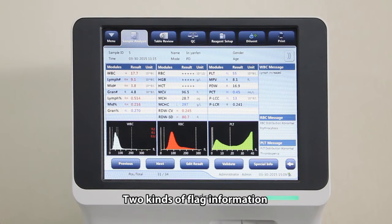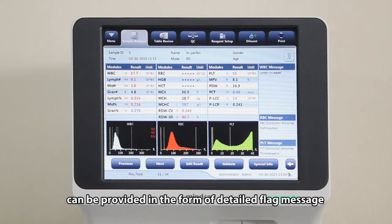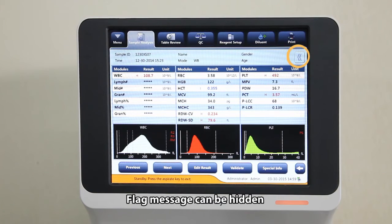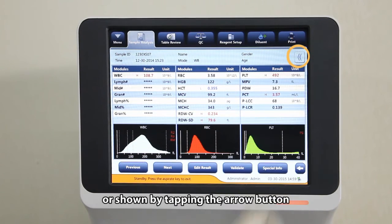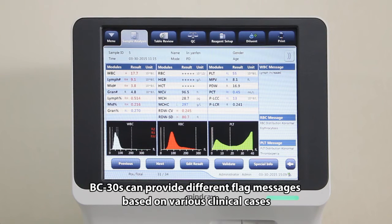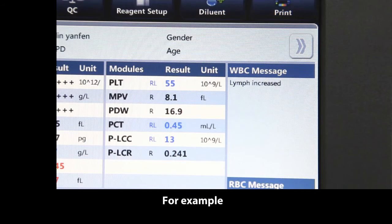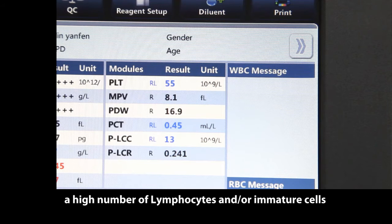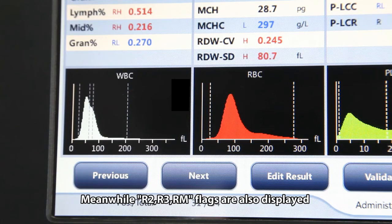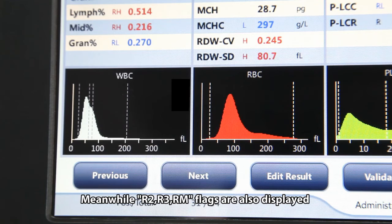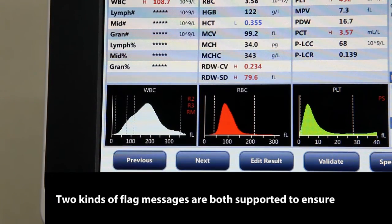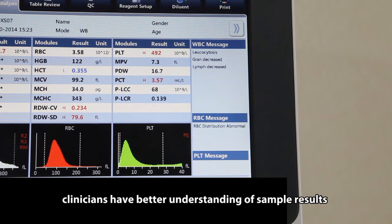Two kinds of flag information can be provided in the form of detailed flag message and traditional markings on histograms. Flag message can be hidden or shown by tapping the arrow button. BC-30S can provide different flag messages based on various clinical cases. For example, lymph increased means a high number of lymphocytes and or immature cells. Meanwhile, R2, R3, RM flags are also displayed. Two kinds of flag messages are both supported to ensure clinicians have better understanding of sample results.